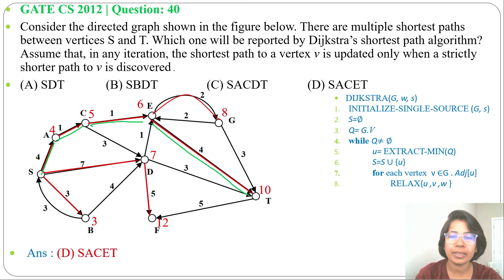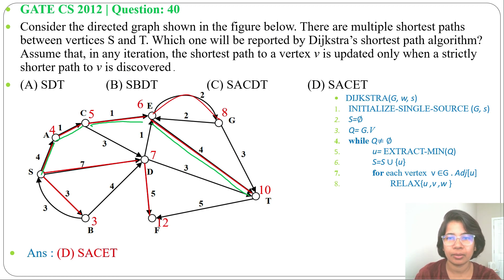By Dijkstra's shortest path algorithm, we get the path s, a, c, e, t — so the answer is option d. I have already discussed Dijkstra's algorithm previously, just go through that. If this lecture is helpful for you, please like, share, and subscribe. Thank you.